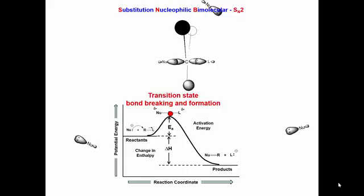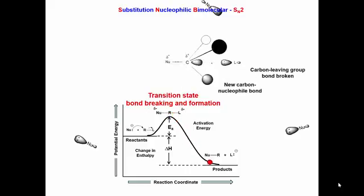At the top of the energy barrier, the molecules are transitioning from reactants to products. At this point, the molecule could come apart and reform the reactants, or fall down to the other side and produce the products.